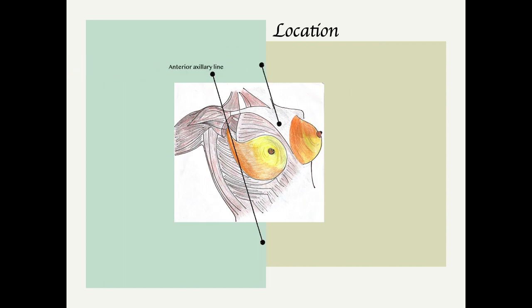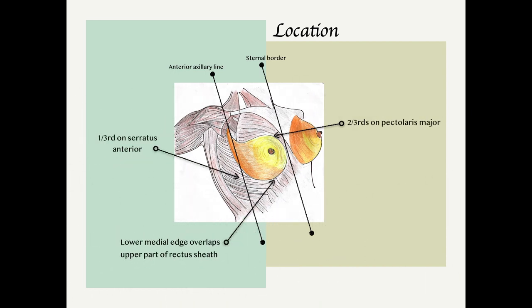It is situated medially to the anterior axillary line and lateral to the sternal border. The breast overlies the second to sixth ribs. Two-thirds of it rests on the pectoralis major muscle and one-third on the serratus anterior muscle. The lower medial edge of the breast overlaps the upper part of the rectus sheath.